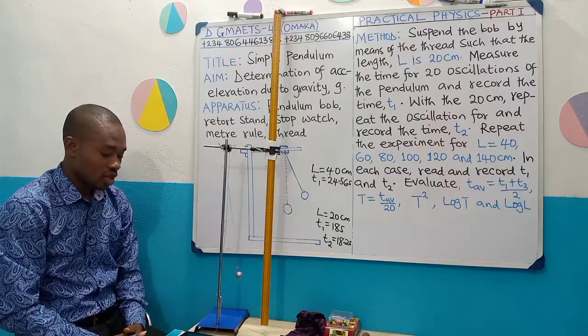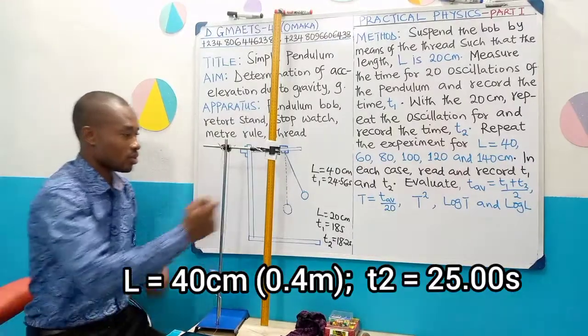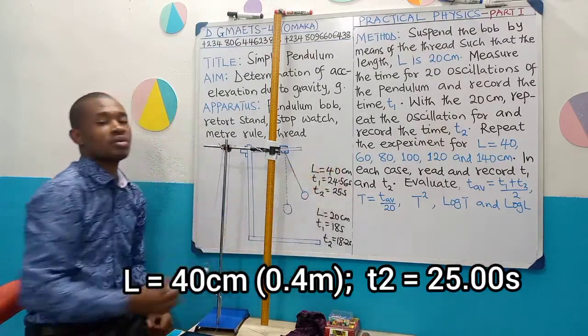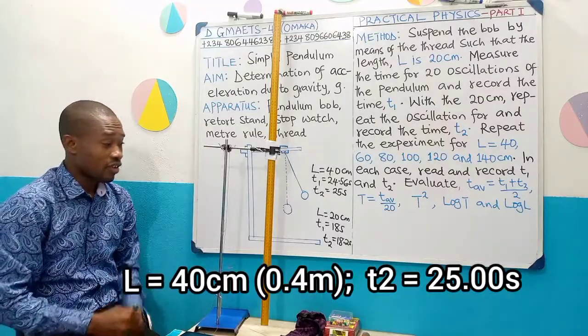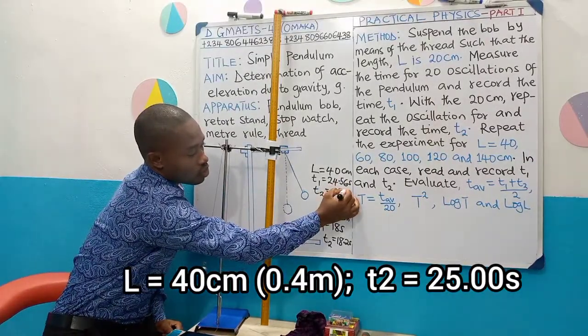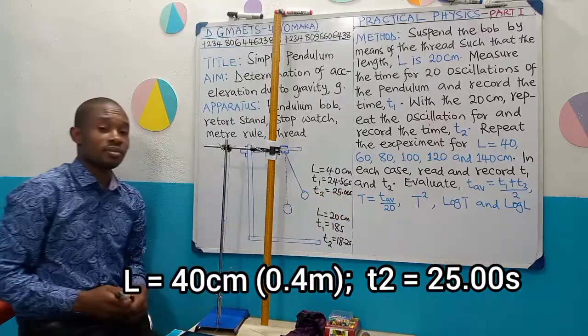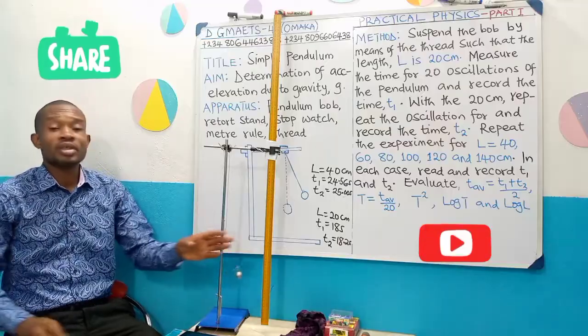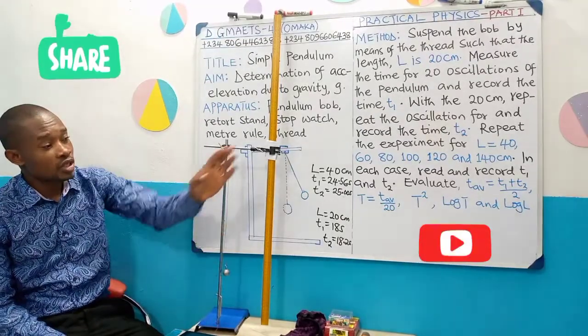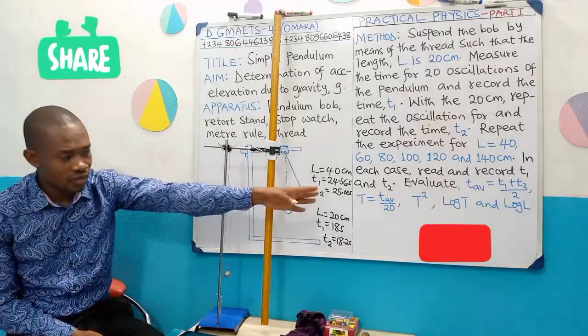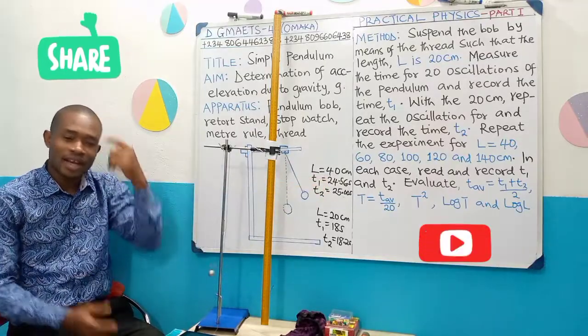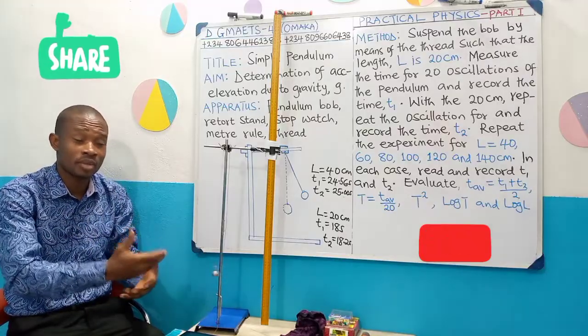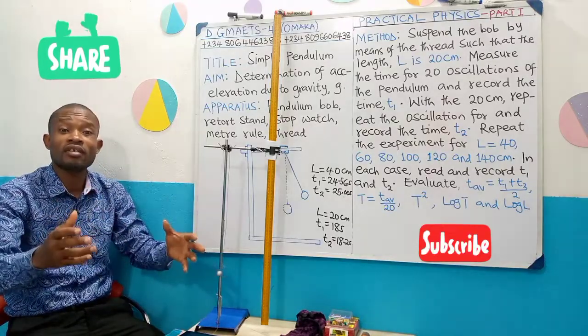I will stop. So this gives me 25 seconds. T2 is equal to 25 seconds, that's what I got here, 25.00 seconds. Usually we will report in two decimals because that is time. So that is how we carry out our simple pendulum experiment. We are expected to do this for all those lengths there, then evaluate all the things we are asked to evaluate. Like I said, this is just part one of the experiment, just to show you how to carry out the experiment. Once you know how to carry out the experiment, your problem is solved.